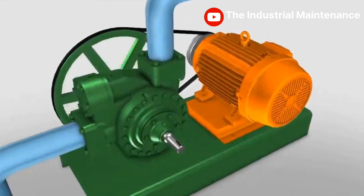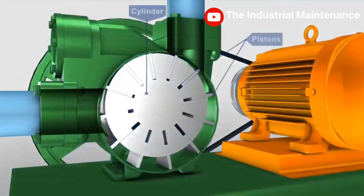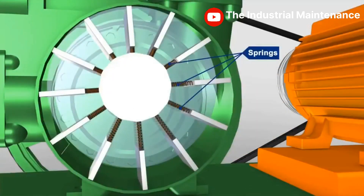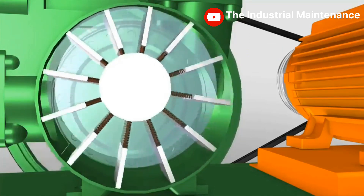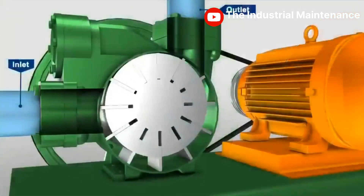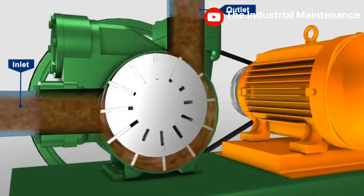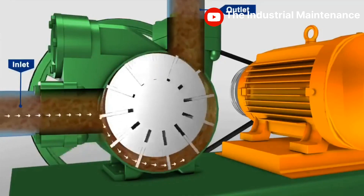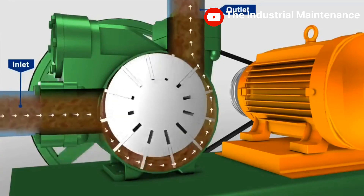The vane pump includes a rotating cylinder containing equally spaced radial pistons arranged radially around the cylinder centerline. A spring pushes the pistons against the inner surface of an encircling stationary ring mounted eccentric to the cylinder. The pistons draw fluid during half a revolution and drive fluid out during the other half. The greater the ring eccentricity, the longer the piston stroke and the more fluid they transfer.